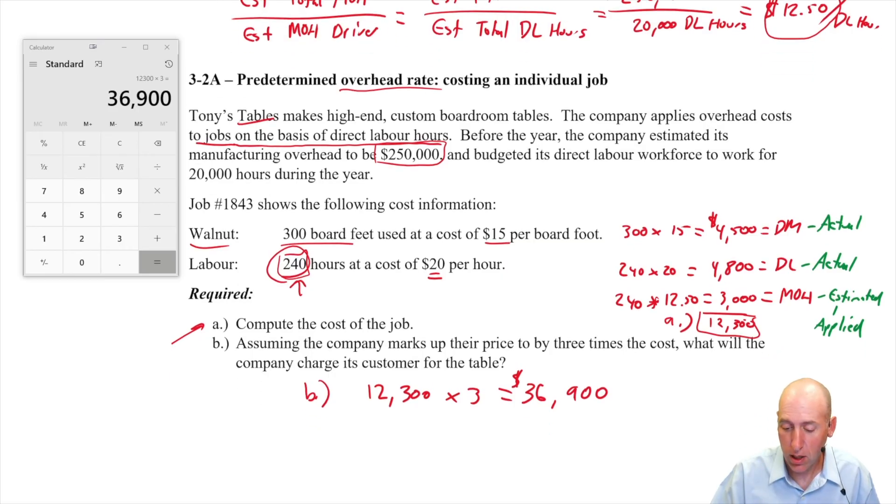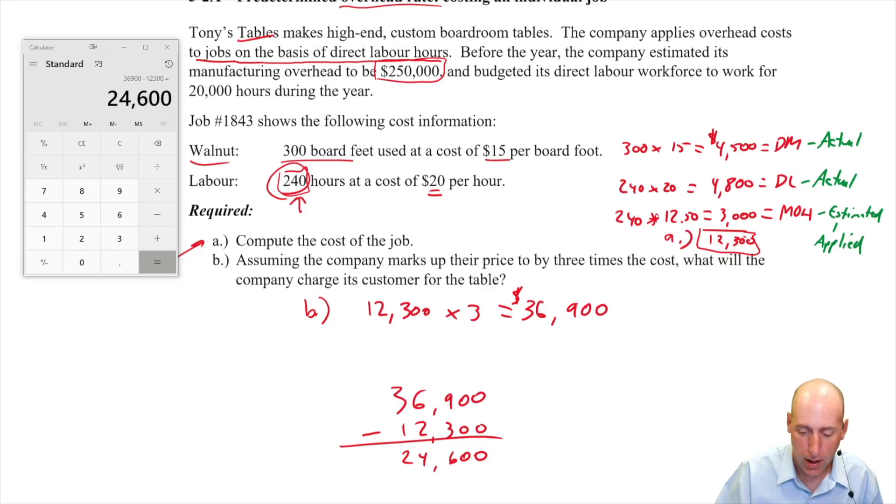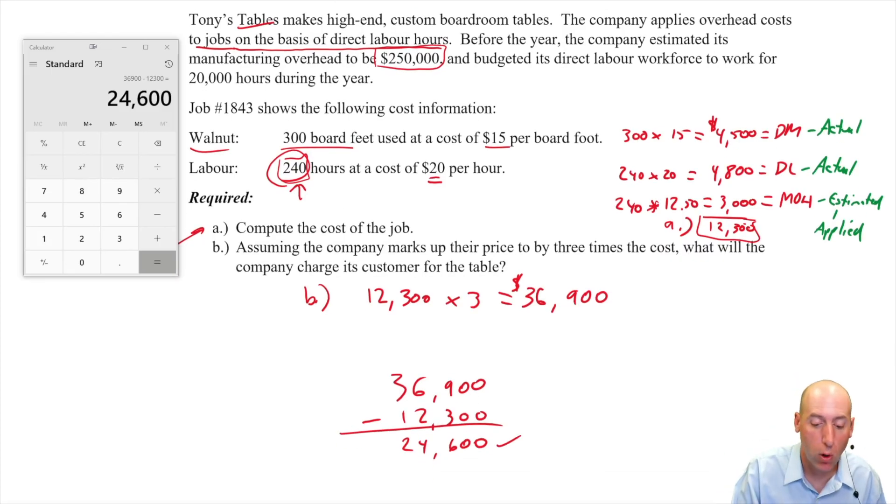$36,900, meaning the margin on this table, this is not asked for, but let's do it. $36,900 minus $12,300 is $24,600. They will make $24,600 in gross profit on the table. Their sales price is $36,900, their cost is $12,300, their gross profit is $24,600. Very healthy margins. Big fancy boardroom tables are indeed expensive. This might even be cheap for a big fancy boardroom table. I've never had to buy one, but I know they are expensive.